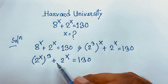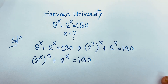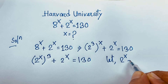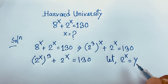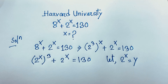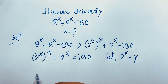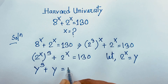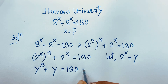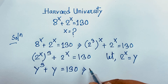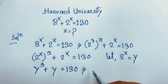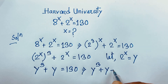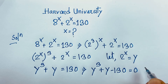Now we have 2 to the power x appearing in both terms. At this moment, let 2 to the power x equal y. So this expression becomes y to the power 3 plus y is equal to 130.